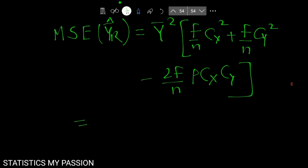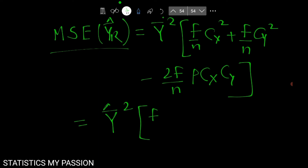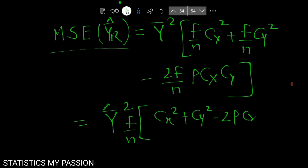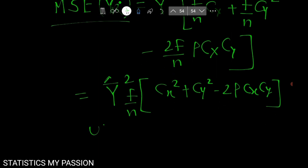So this is the formula of the MSE. You can remember this term: MSE equals (f upon n) times (CX squared plus CY squared minus 2 rho CX CY). This is the MSE up to second-order approximation.